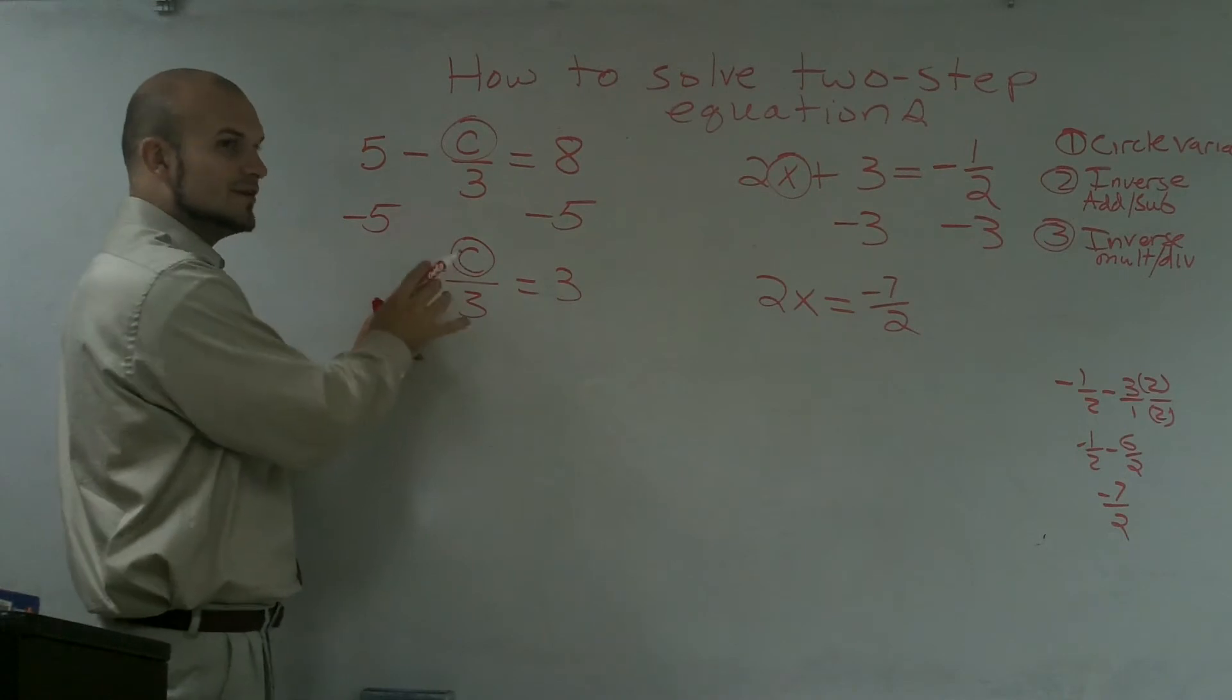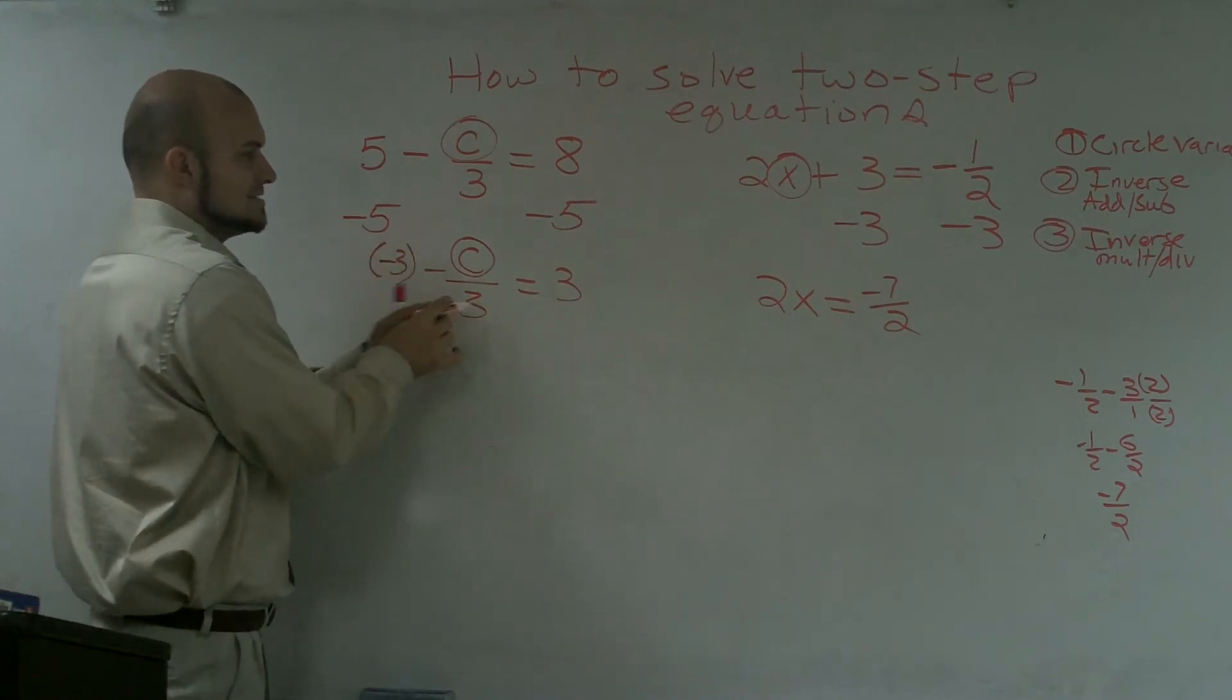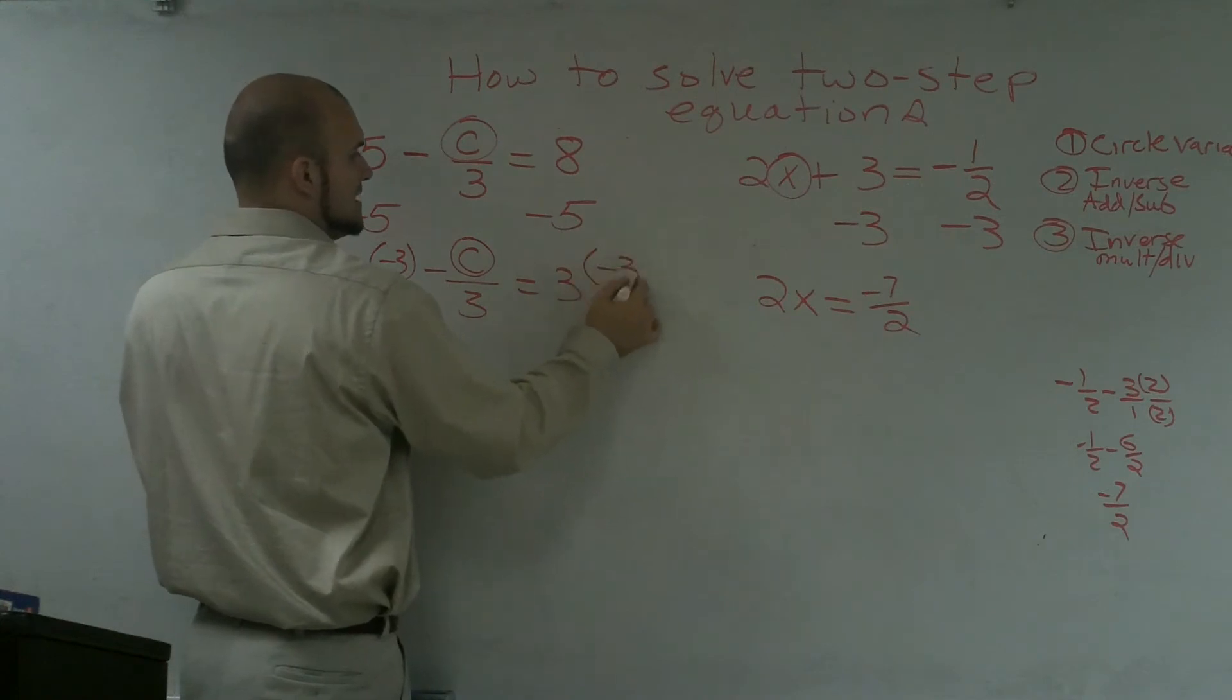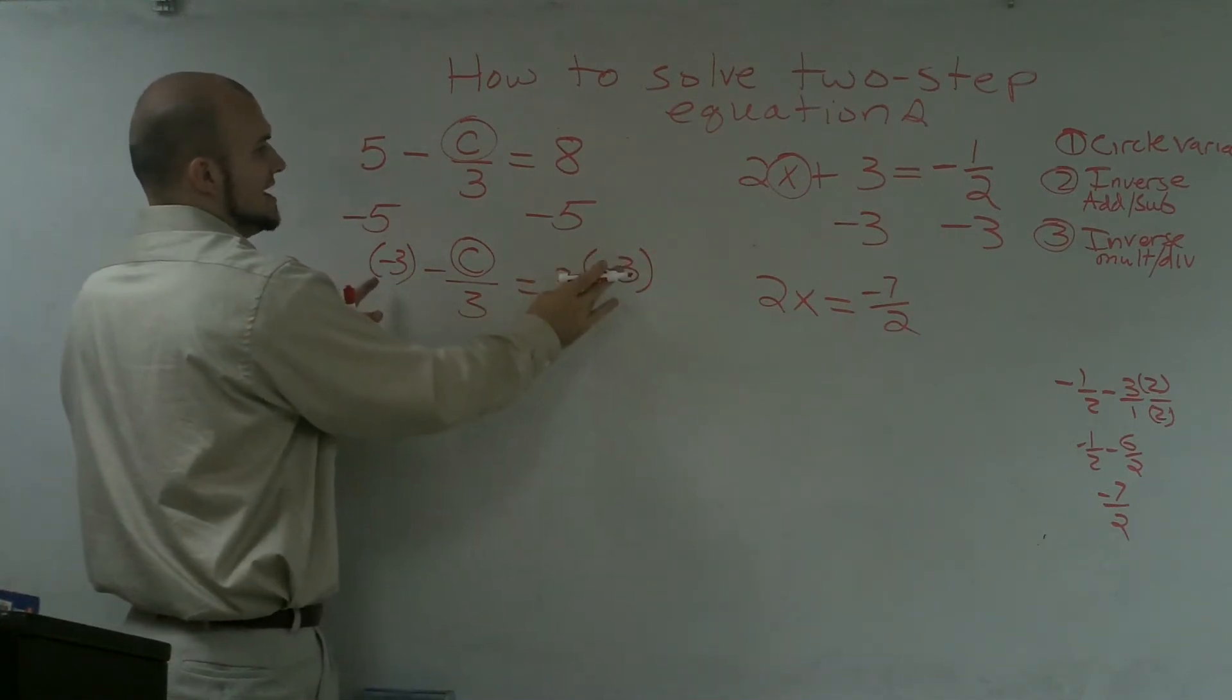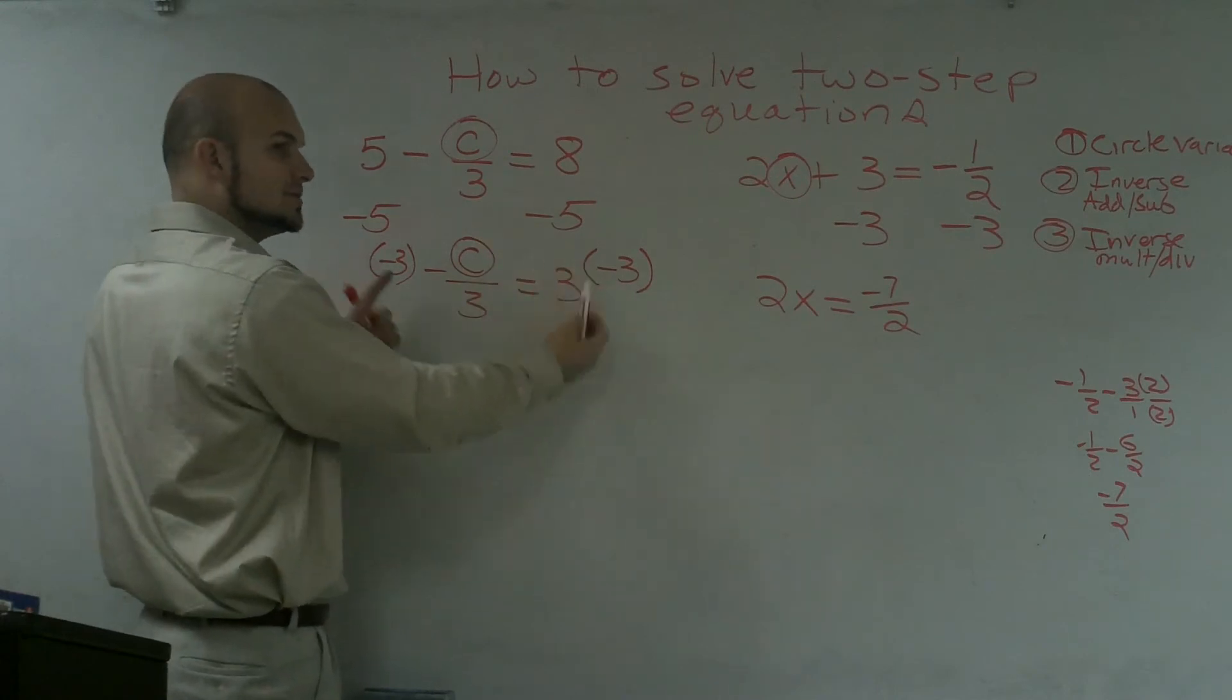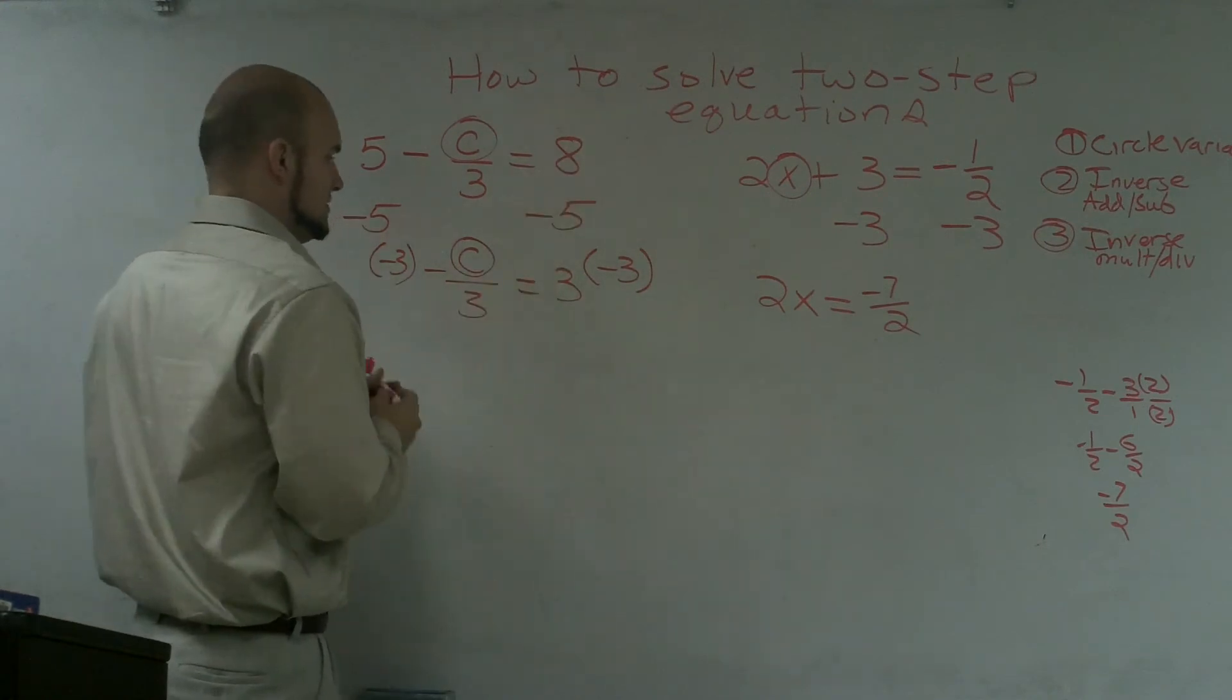And we never want to solve a variable for a negative variable. We're always solving it for the positive variable. So I'm going to actually want to multiply by a negative 3. That's going to cancel out the negative signs and cancel out the 3s. And I'm going to multiply that negative 3 on both sides. And make sure you multiply on both sides, because that is going to be your multiplication property of equality. And when you subtract on both sides, that's the subtraction property of equality.